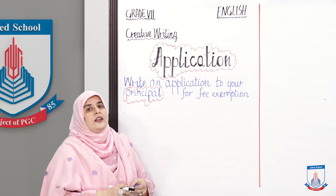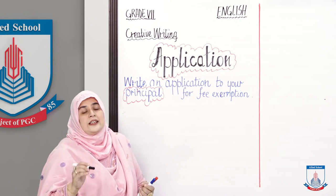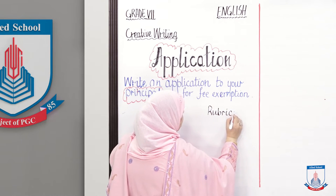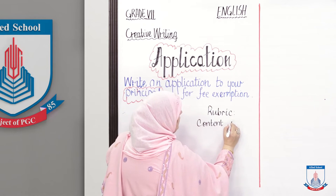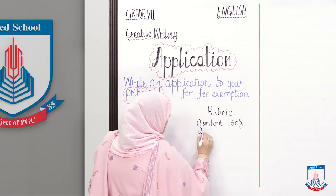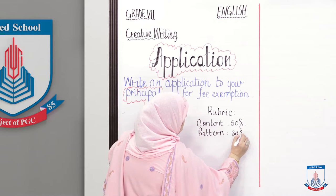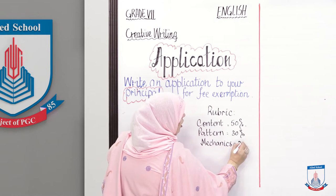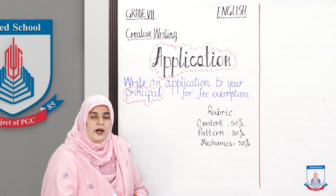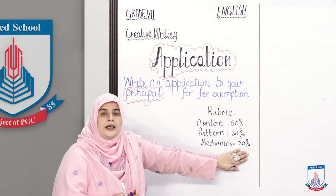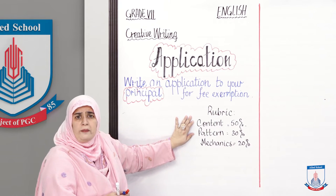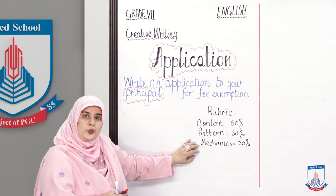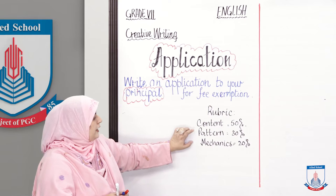Now we make a rubric so we know how marks are distributed when writing an application. Content carries 50% weightage, your pattern is 30% weightage, and mechanics — spelling errors, tense errors, hierarchy — make up 20% weightage. This means if your content and pattern are correct, you are already scoring 80% marks, even if you have some spelling issues. However, that does not mean you ignore grammar and spelling entirely.